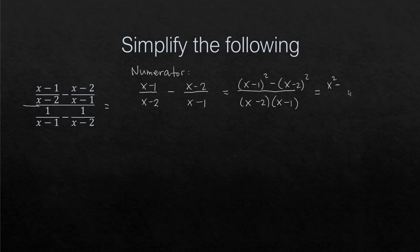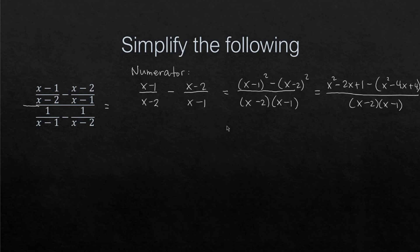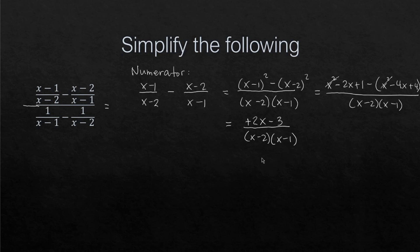Expanding and simplifying further: x² - 2x + 1 minus (x² - 4x + 4), all divided by (x-1)(x-2). The x² terms cancel out. We get -2x minus -4x which is positive 2x, and 1 minus 4 which is -3. So the simplified numerator is (2x - 3) all over (x-2)(x-1).